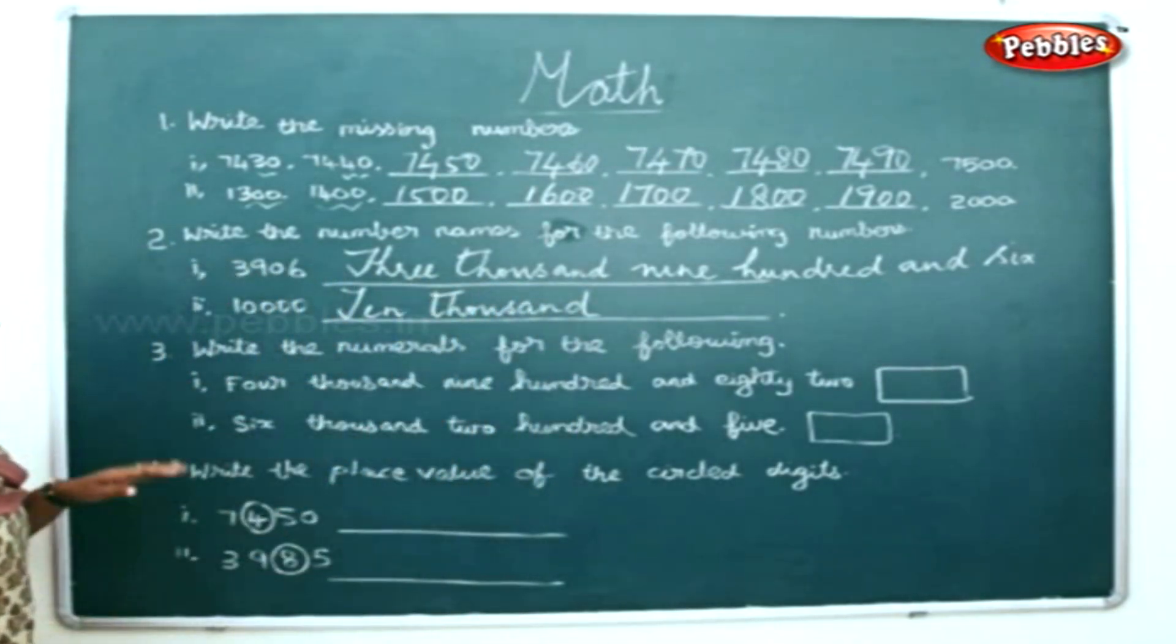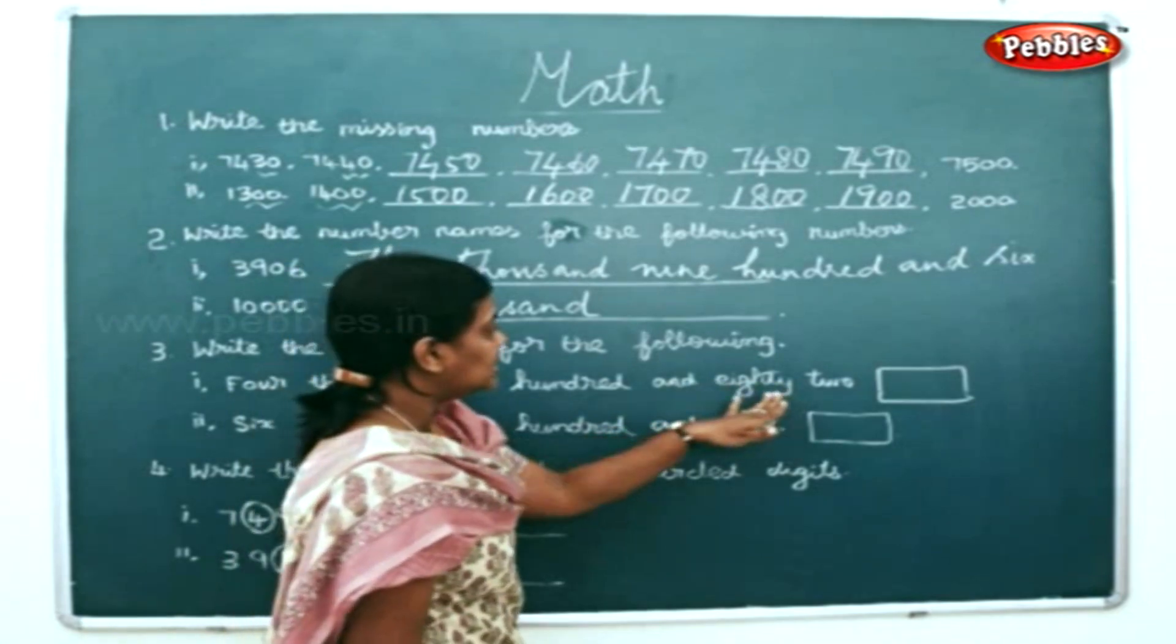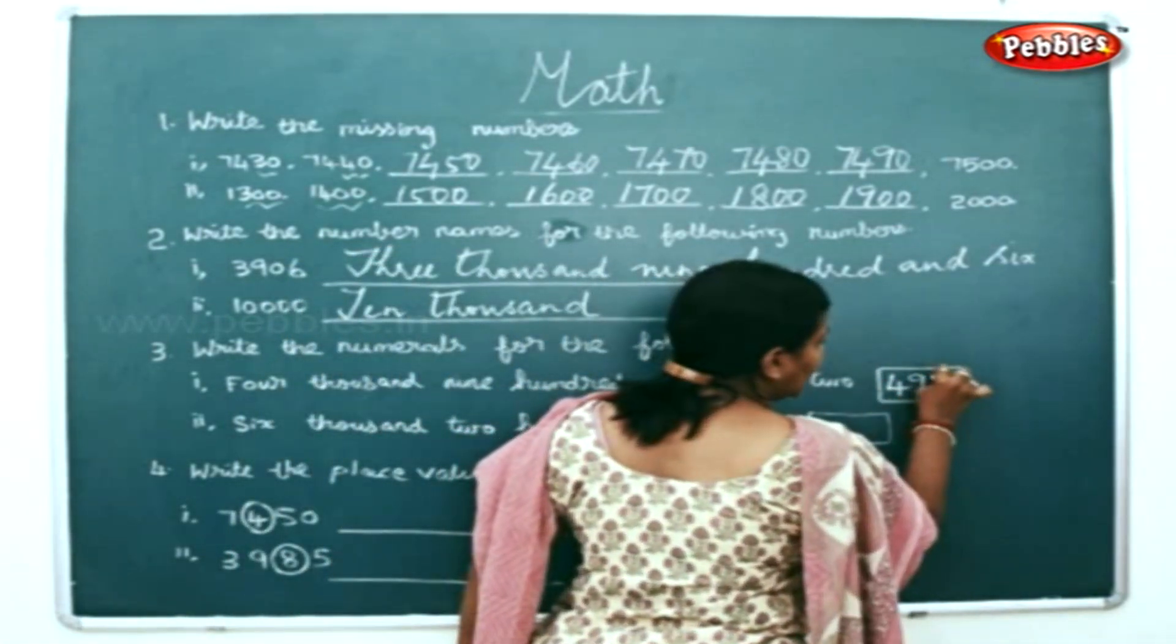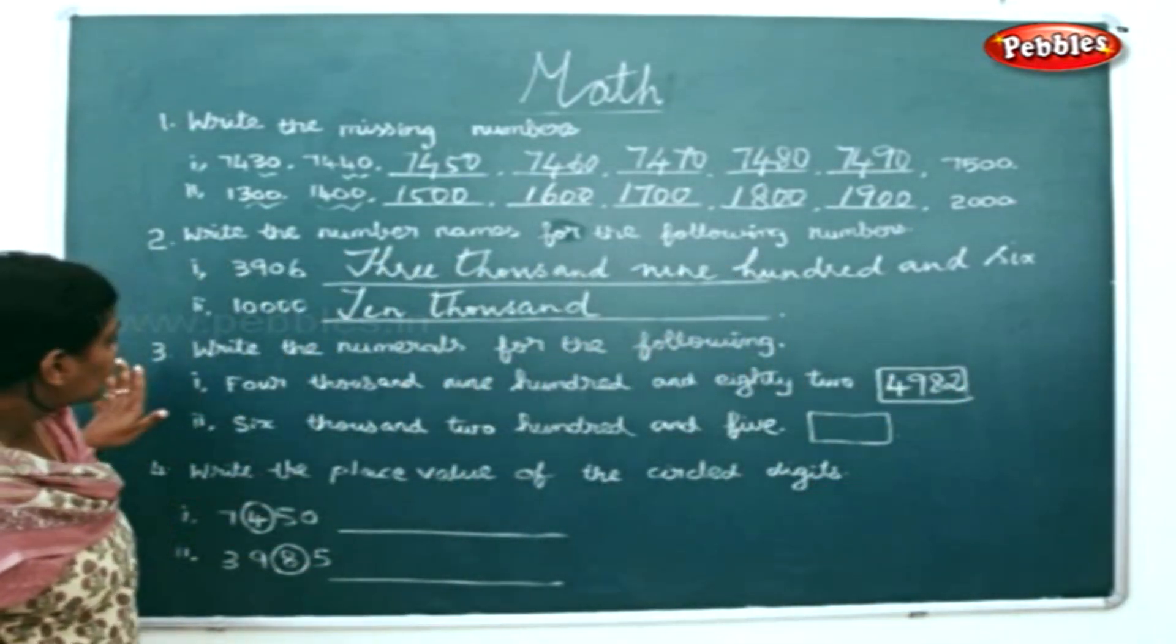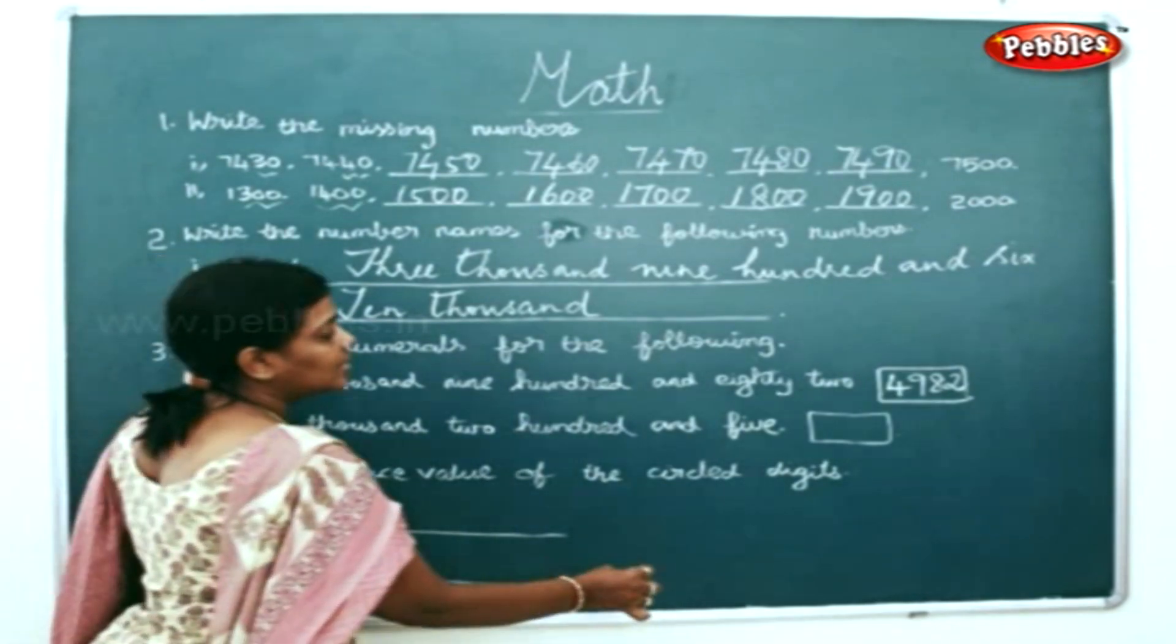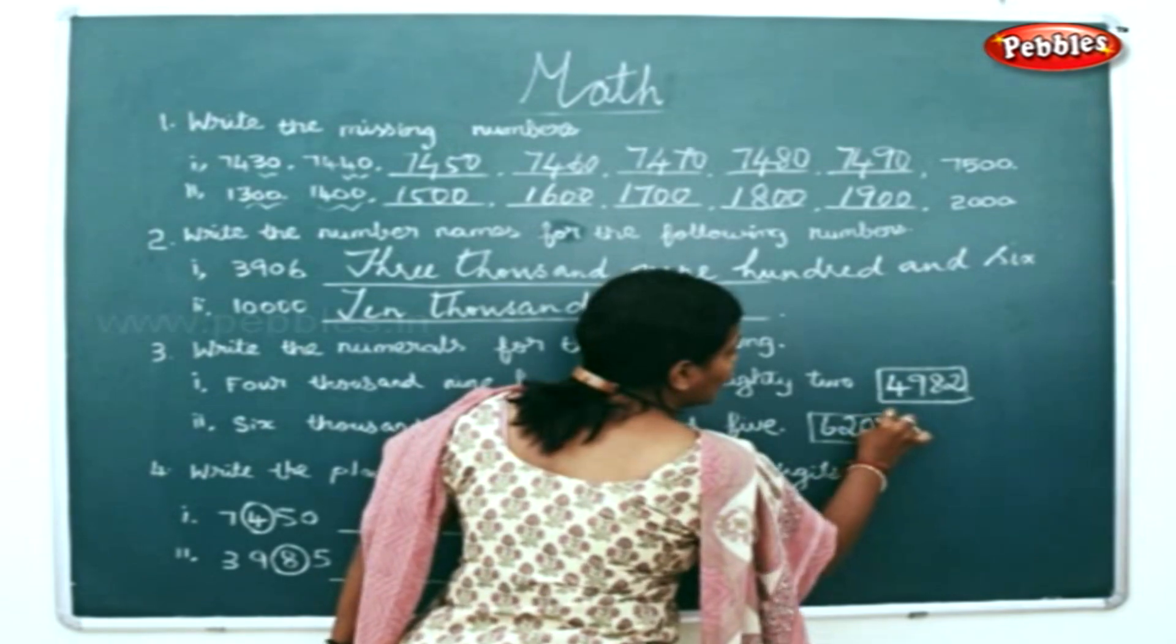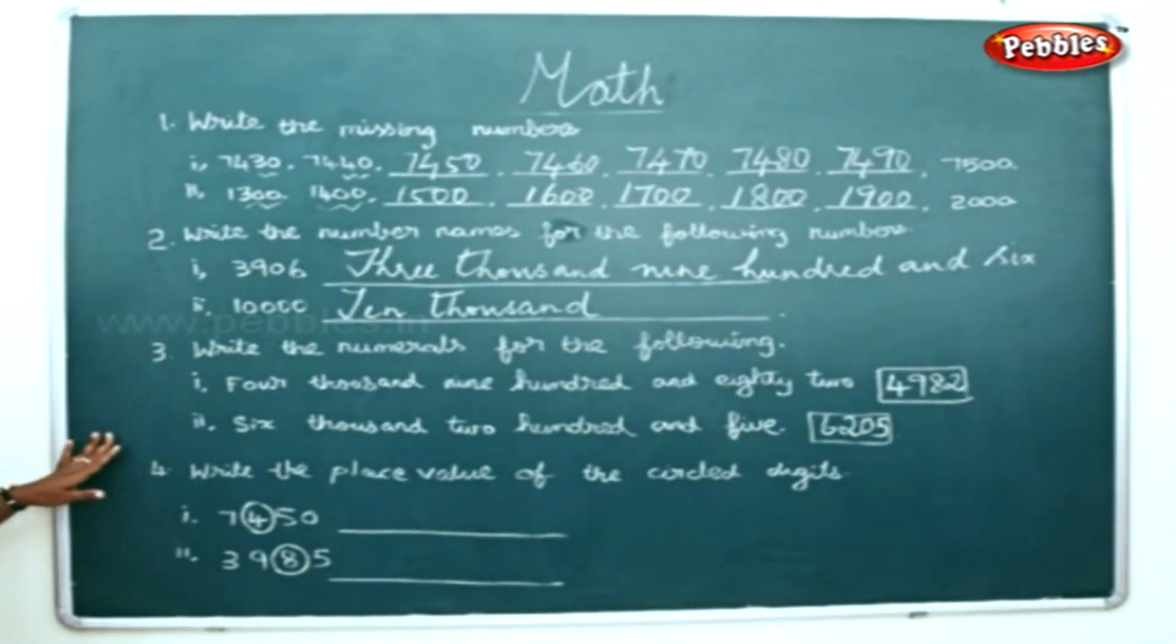Now write the numerals for the following: four thousand nine hundred and eighty-two, next six thousand two hundred and five. Now write the place value of the circled digits.